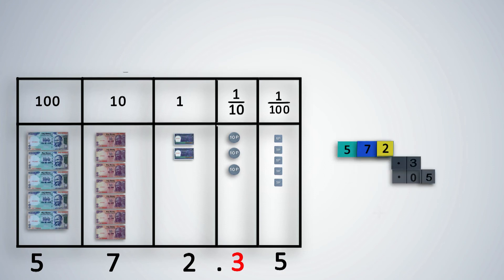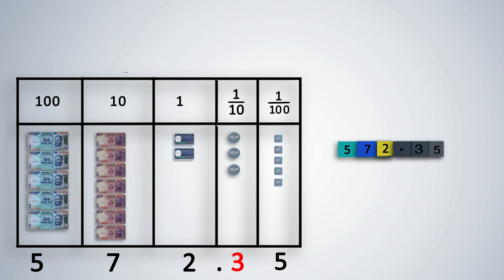Ask students to observe how the number is represented with the strips. Students must observe how the number is written and read as 572.35 rupees. Numbers to the right of the decimal point are read as individual digits since they represent fractional quantities.